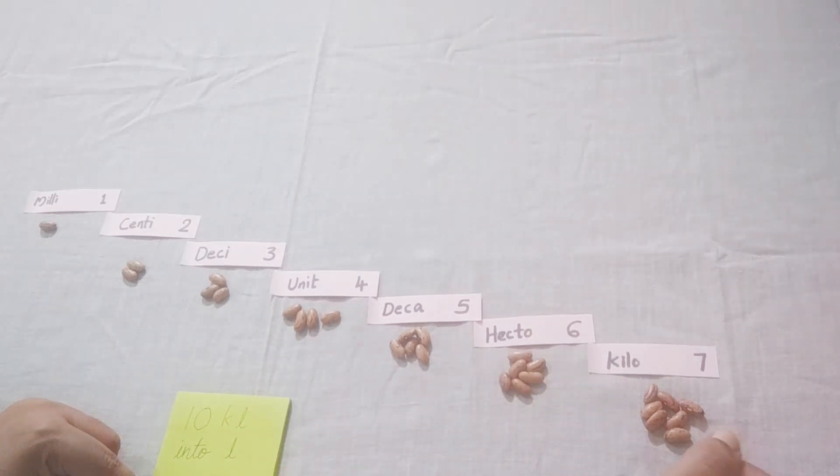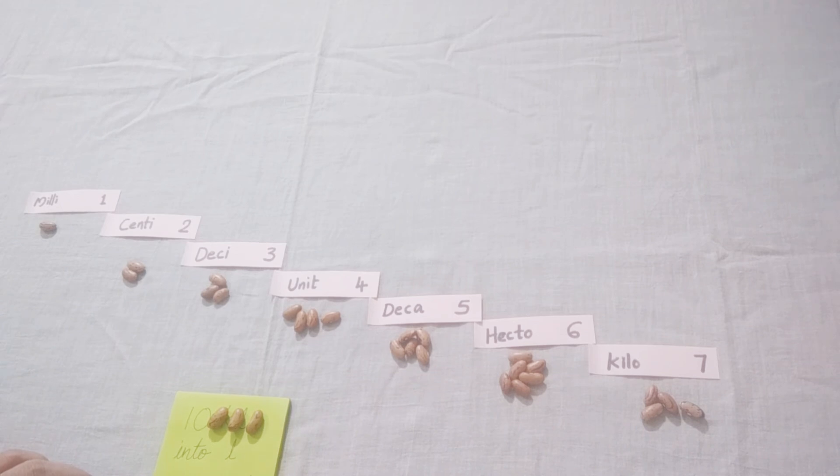So how many more beans do we need here? We need three more beans. That three more beans you take out, and these three zeros you add here - one, two, three. So your answer will be 10,000. So 10 kiloliters is equal to 10,000 liters.